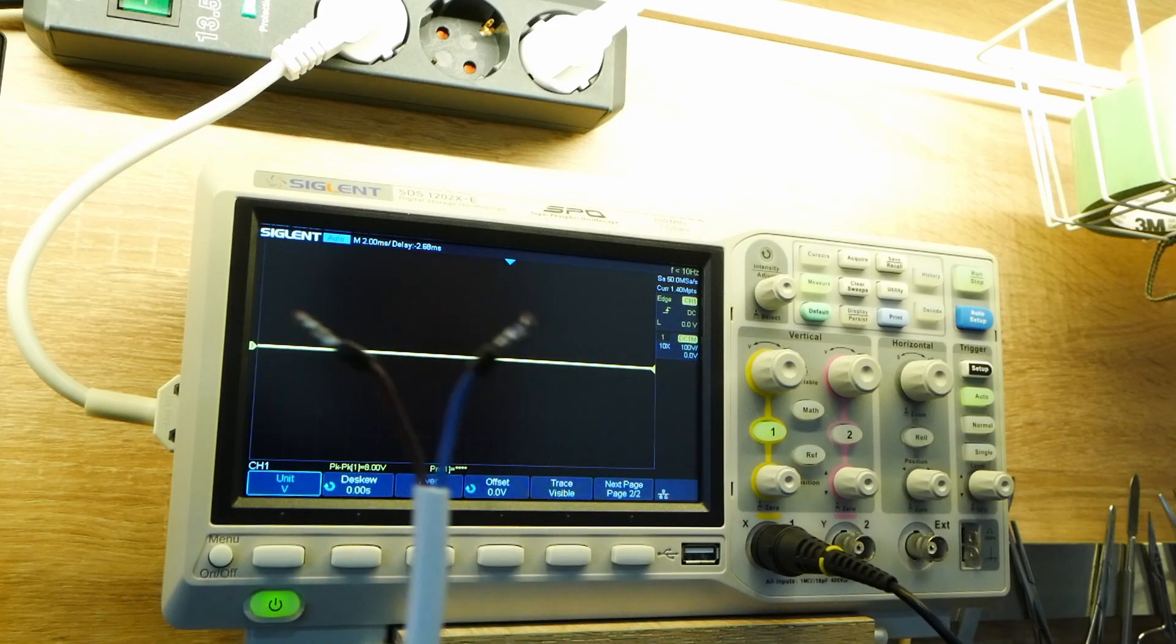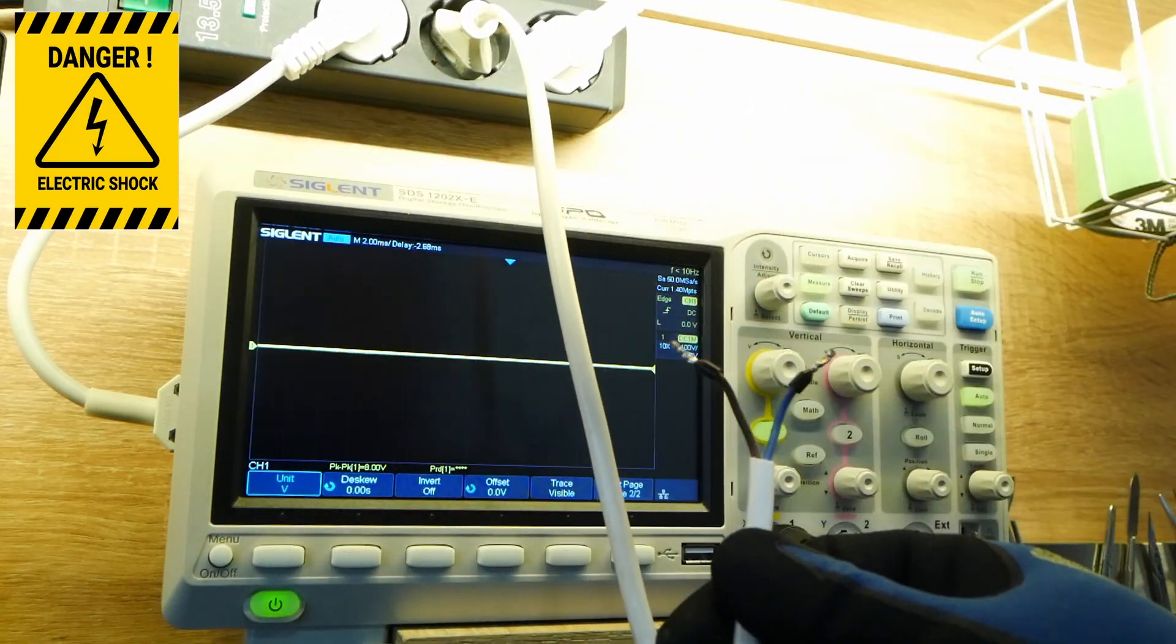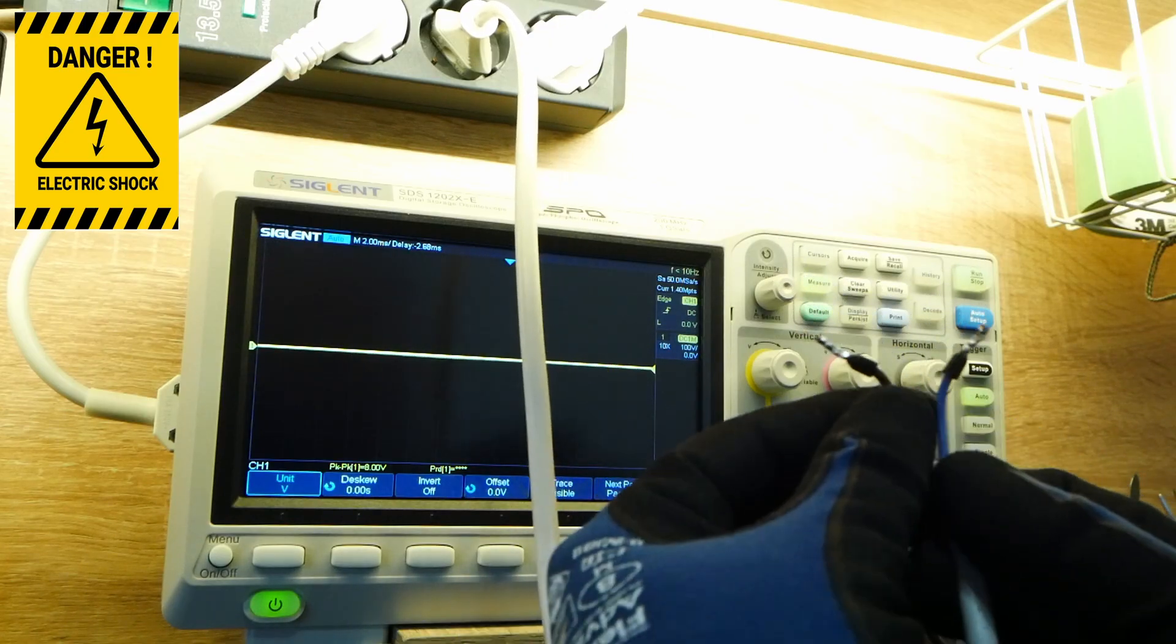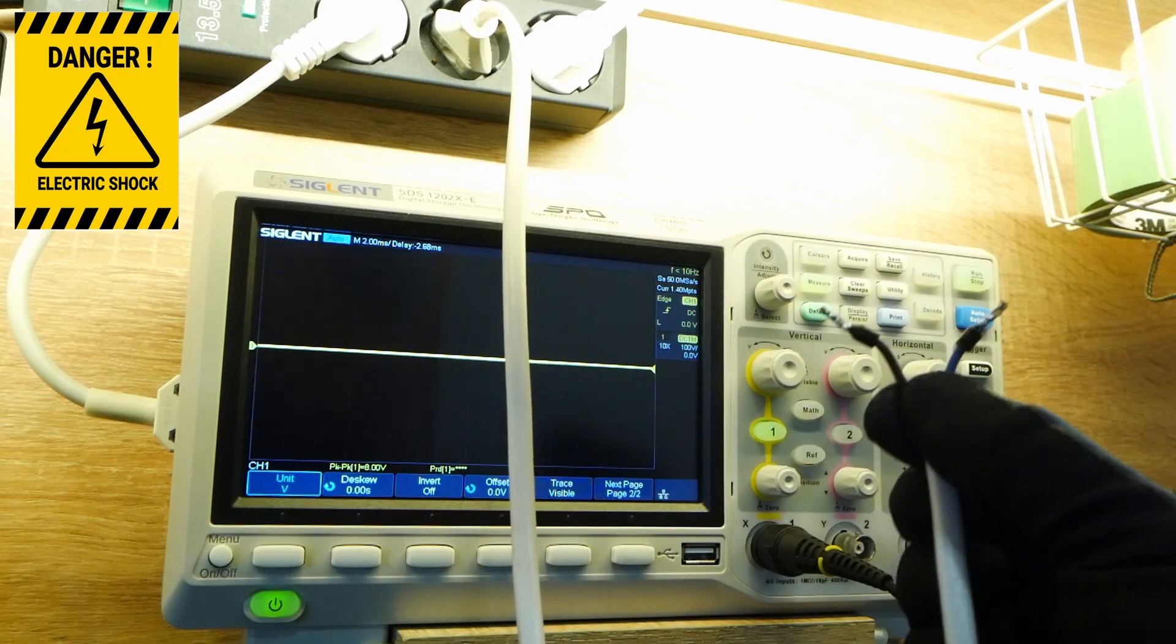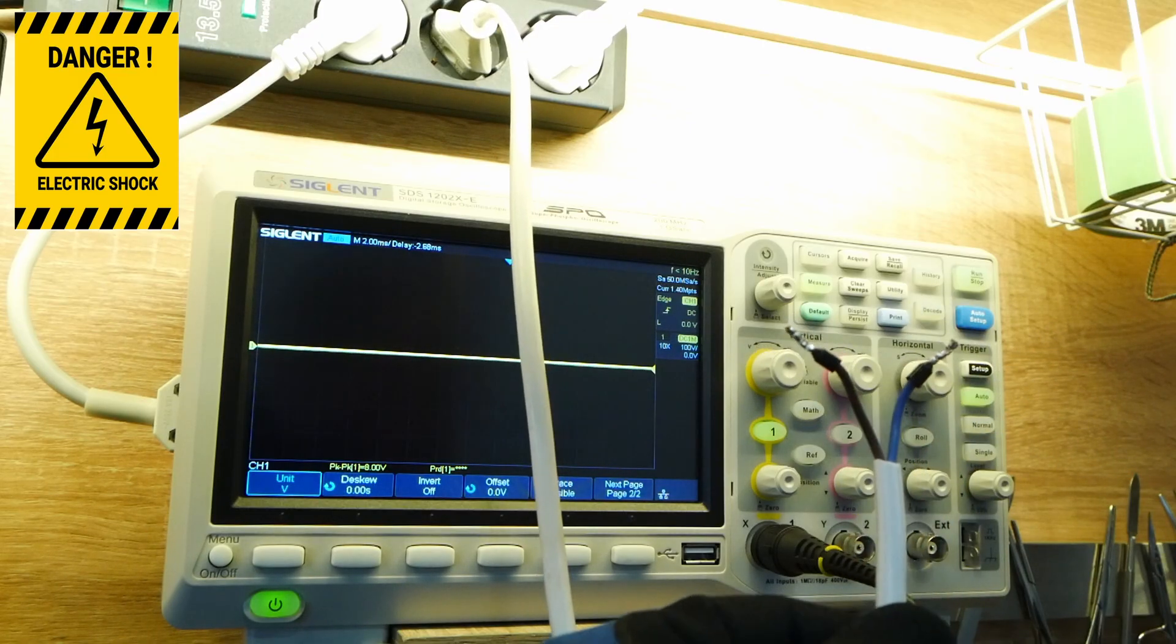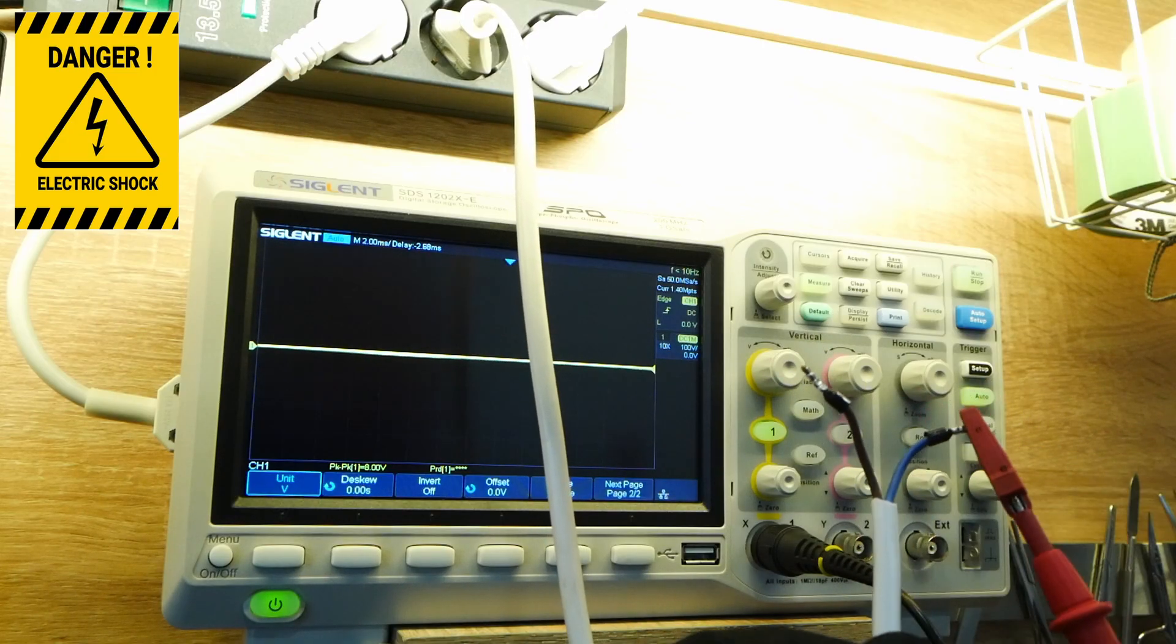I'm going to connect this cable to mains. Okay, so right now on this cable we have around 230 volts AC, and we can measure that with our multimeter.